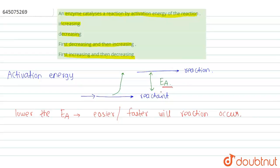In order to perform a reaction very fast, what we have to do is lower the activation energy of the reaction, and this is what the enzyme does. When we add an enzyme to a reaction, it decreases the activation energy.